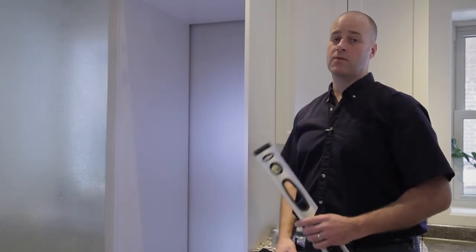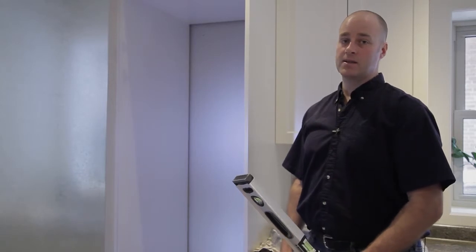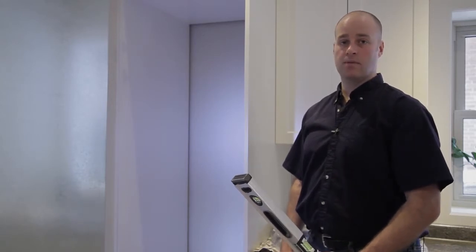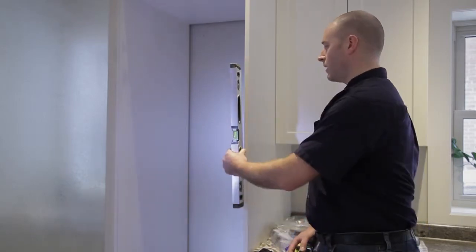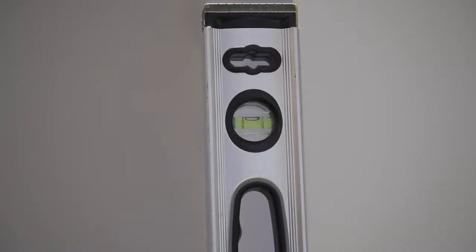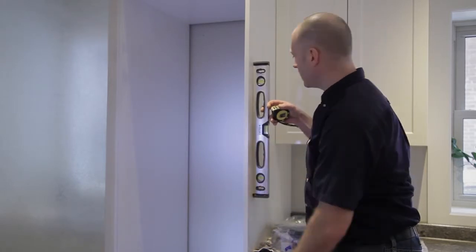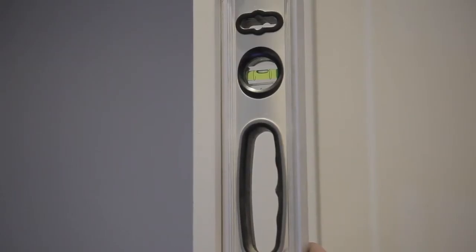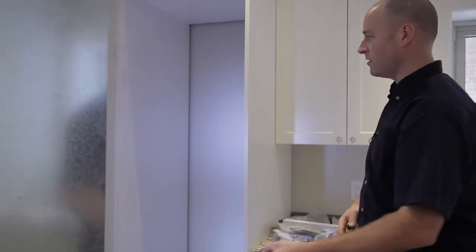We're going to check first that everything is true and level because that will make installing the panels later much easier. A check for level at the front looks good, check for level at the side also looks good so we're lucky. The cabinet maker has done a good job.